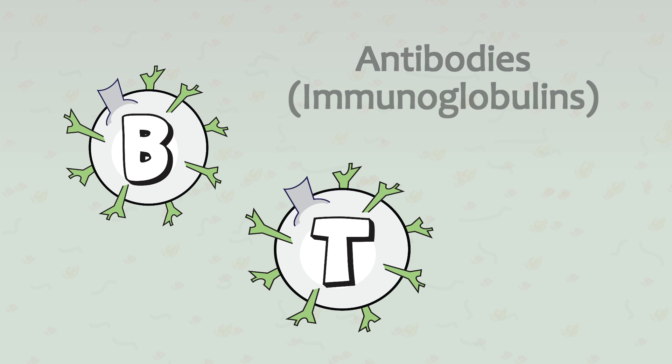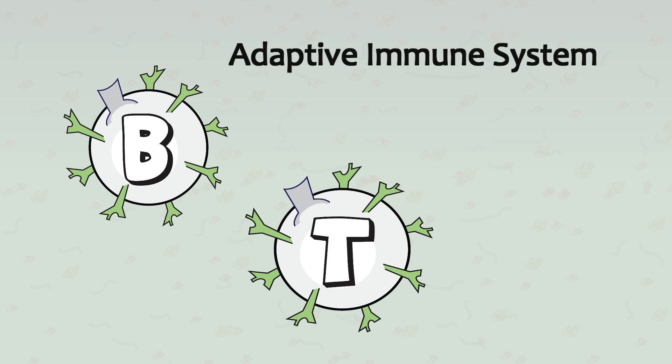B cells and T cells are primarily associated with our adaptive immune system, and they work together in dynamic ways to detect and eliminate an almost endless number of antigens.